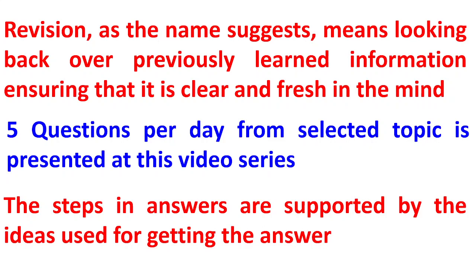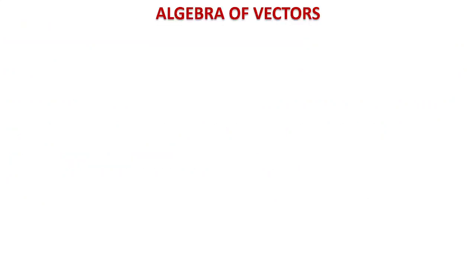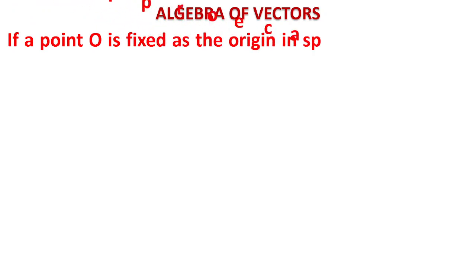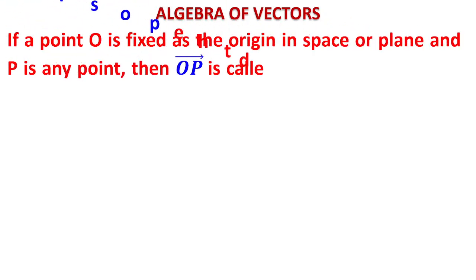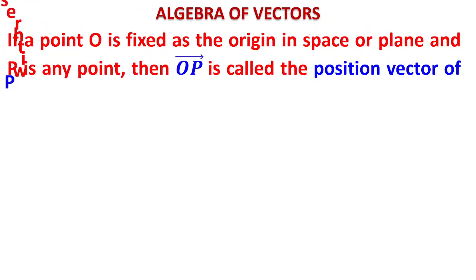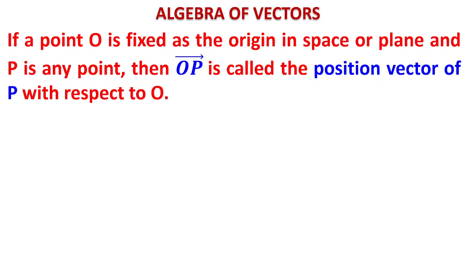Let us look at some ideas about vectors. If a point O is fixed as the origin in space or plane — space means three dimensions and plane means two dimensions — and P is any point, then vector OP is called the position vector of P with respect to O. Whenever we talk about any point, we talk about its position vector.